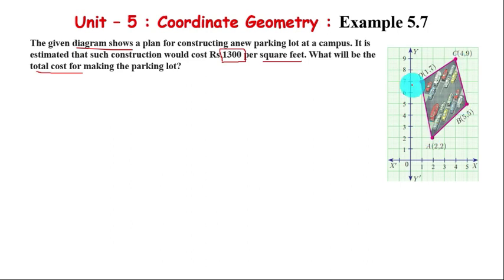The shape is a quadrilateral. We'll label the vertices in anticlockwise direction as A, B, C, D. The coordinates are: A(2,2), B(5,5), C(4,9), D(1,7). So the area of quadrilateral ABCD...